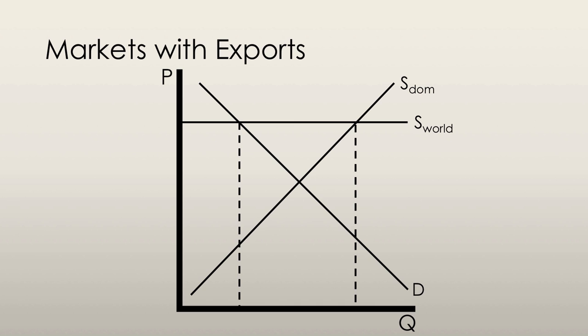The higher price leads to an increase in the quantity supplied of the good, as the law of supply predicts that it should. The new quantity supplied is at the point where the world supply curve intersects the domestic demand curve. Supply curve, my bad.